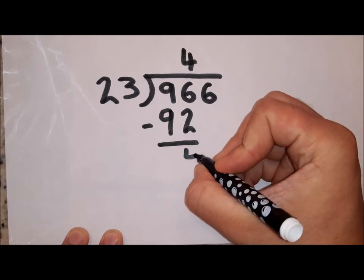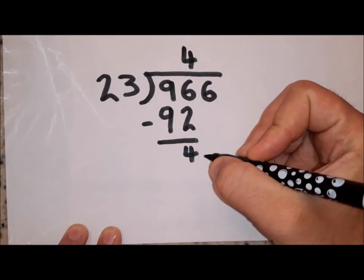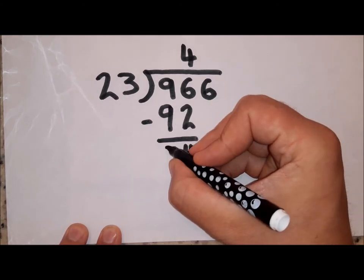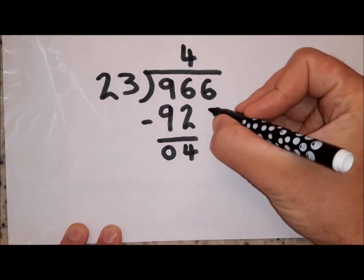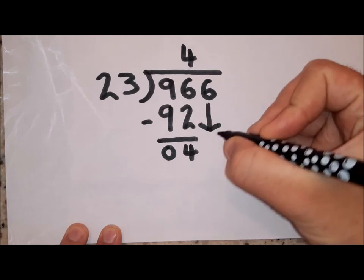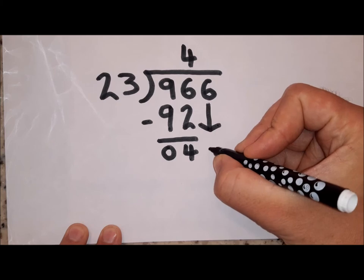Now here's the tricky part. That 92 that I found from my 4 23's, I'm going to take away from the 96 that I divided. I haven't got anything in that column, so I've just got 4. And I bring down the last digit over there, the 6, into this column, which gives me 46.